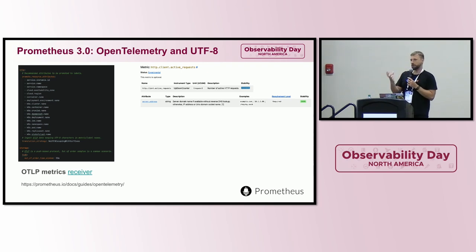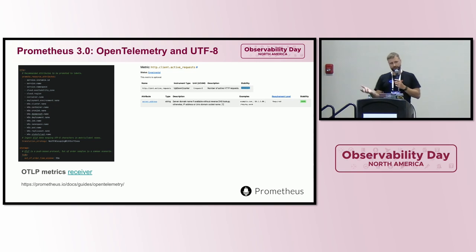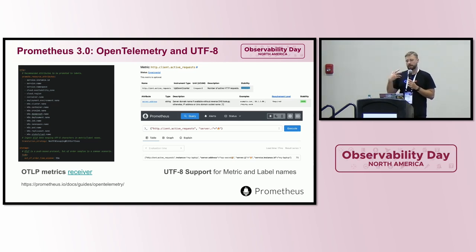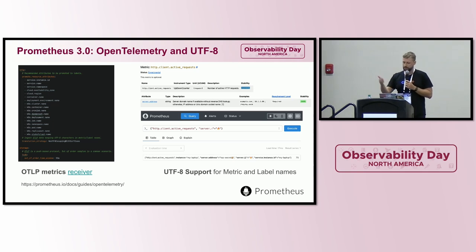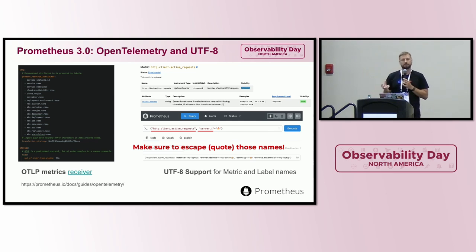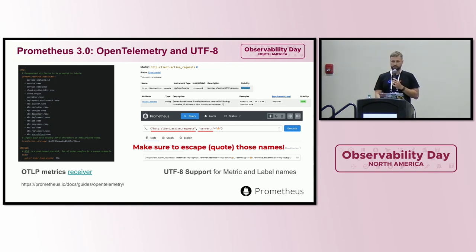If you want to use OpenTelemetry semantic conventions, you will definitely be excited because in Prometheus 3.0, UTF-8 support is fully enabled on both storage and UI. This allows you to use exactly the same format for your metric names and label names that was not previously possible. To achieve this, you need to quote special metric names if they have any character which was not previously supported, but it's pretty handy — make sure to keep that in mind.